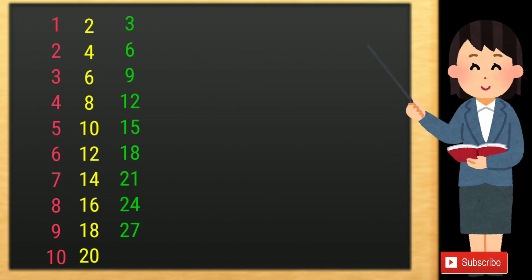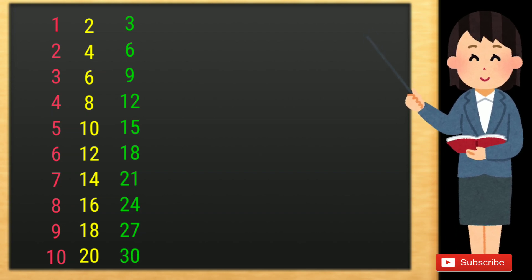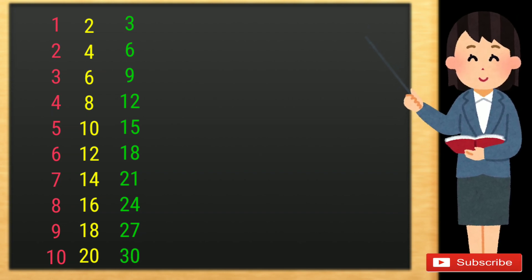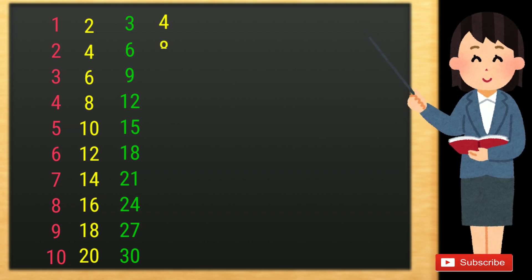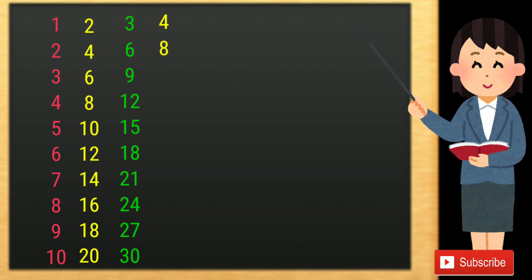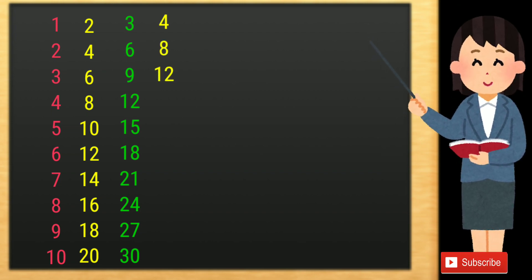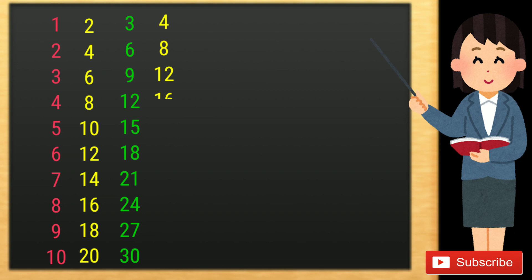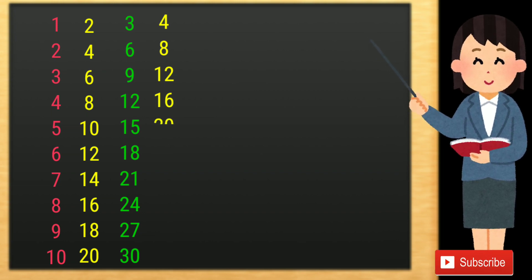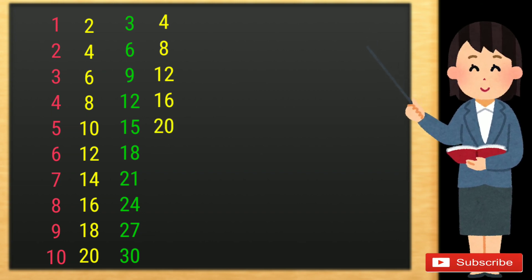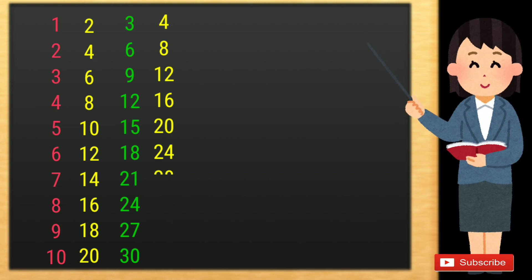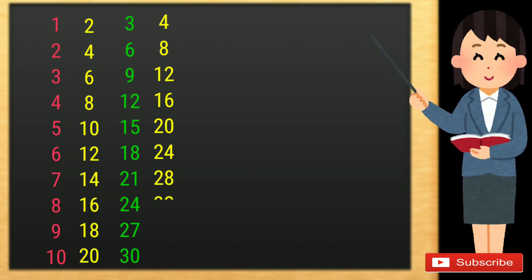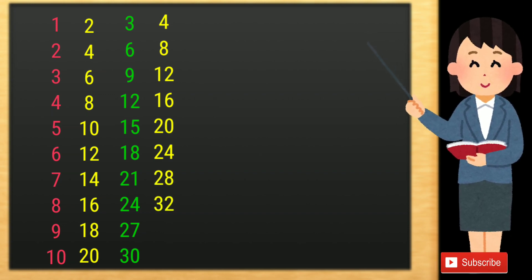3 10s are 30. 4 1s are 4, 4 2s are 8, 4 3s are 12, 4 4s are 16, 4 5s are 20, 4 6s are 24, 4 7s are 28, 4 8s are 32, 4 9s are 36.